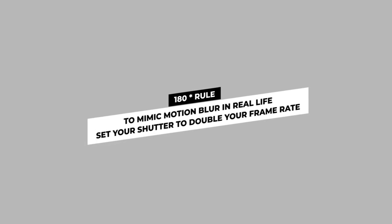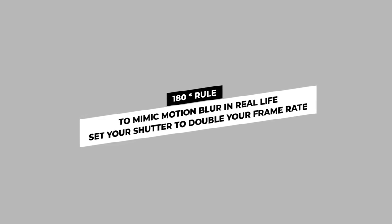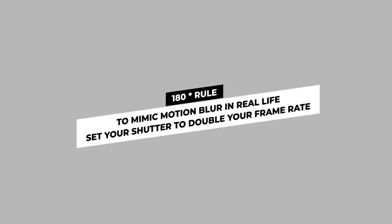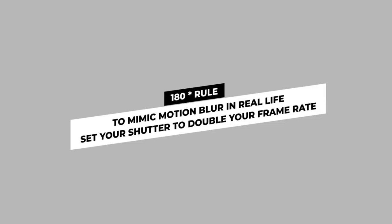So once you have your frame rate set, you then have to take into consideration this 180-degree rule. Without getting too technical, the 180-degree rule indicates that to mimic motion the same way the human eye experiences it in real life, the shutter speed should be set to double your frame rate. So with those two elements in mind — 24 frames per second and the 180-degree rule — we double our frame rate to establish our shutter speed.